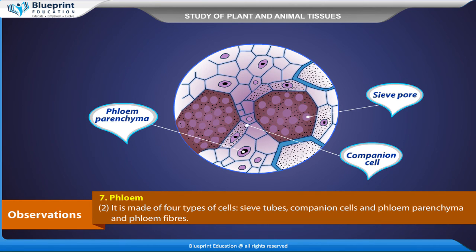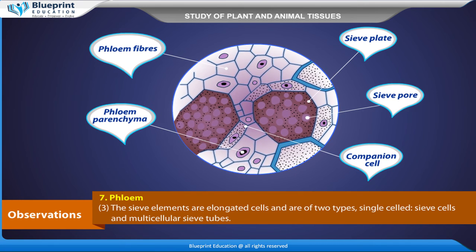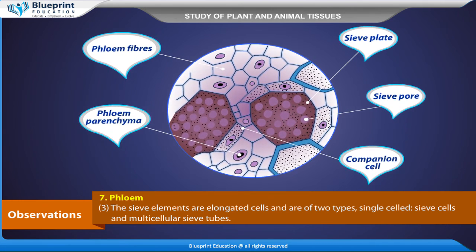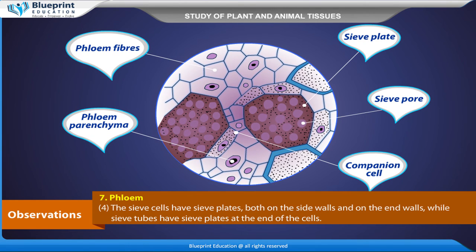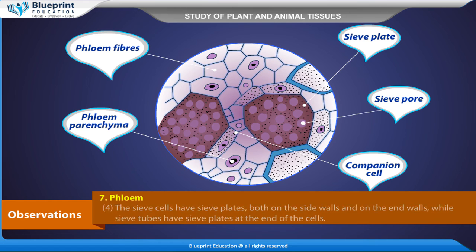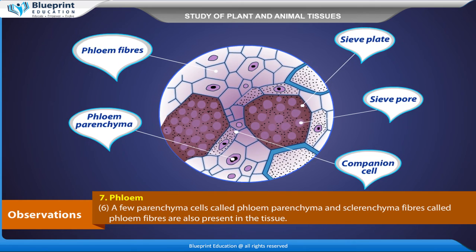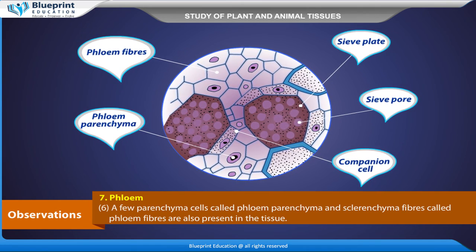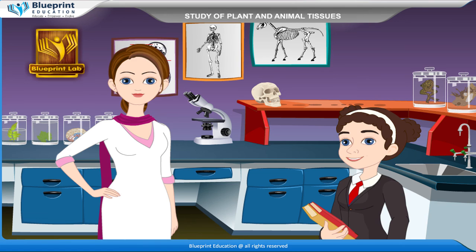Phloem is a complex permanent tissue made up of four types of cells: sieve tubes, companion cells, phloem parenchyma, and phloem fibers. Sieve cells are unicellular and sieve tubes are multicellular. Sieve cells have sieve plates on side walls and end walls, while sieve tubes have sieve plates only at the end of cells. Adjacent to the sieve element lies an elongated companion cell with a prominent nucleus. Phloem parenchyma and phloem fibers (sclerenchyma fibers) are also present. Phloem conducts food from the leaf to different parts of the plant wherever it is required or stored.